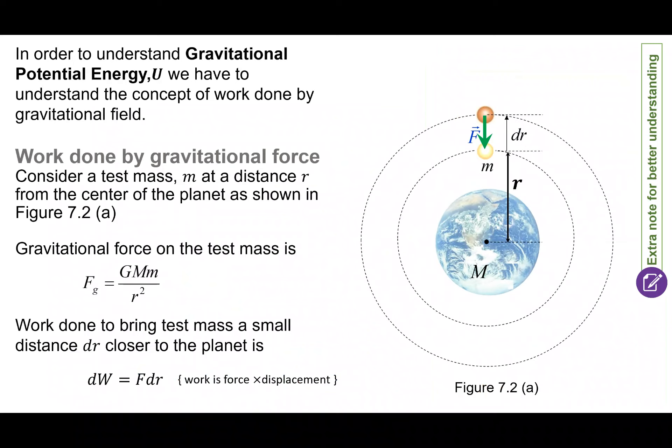So in order to understand gravitational potential energy, we have to understand the concept of work done by gravitational field. Work done by gravitational force. Consider a test mass M at a distance R from the center of the planet. So contohlah kita ada objek ni yang warna kuning ni. So dia kata gravitational force on the test mass adalah sama dengan FG. FG, gravitational force lah, G M besar M kecil over R squared. So sekarang kita tengah tengok objek yang ni.